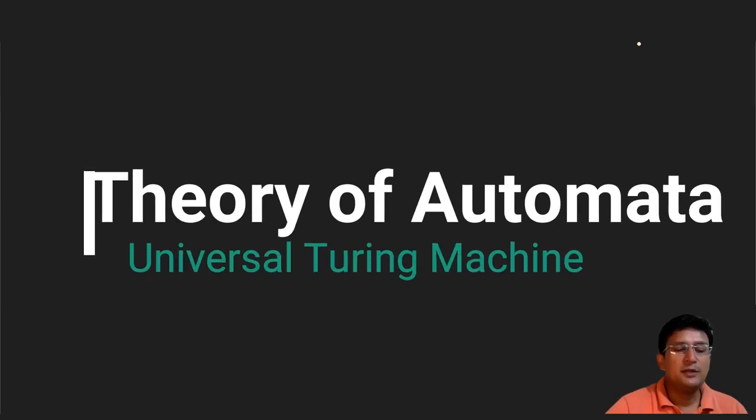Hello everyone, we will discuss about the universal Turing machine in this lecture. We have already discussed in the Church-Turing thesis that anything that can be done on the digital computer can also be done by the Turing machine. This means that the Turing machine and the digital computer are equivalent.